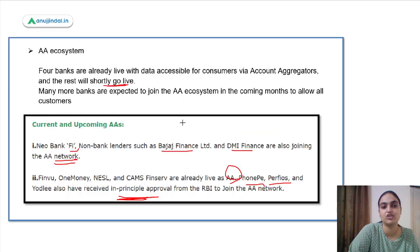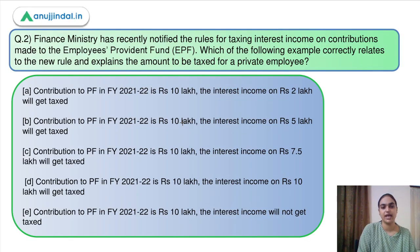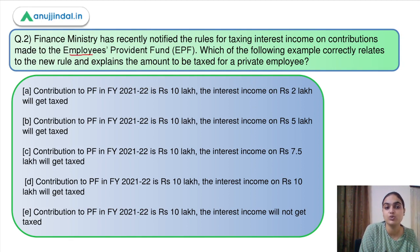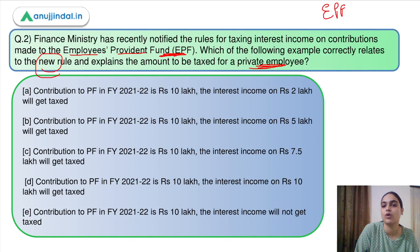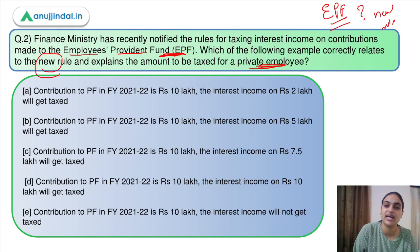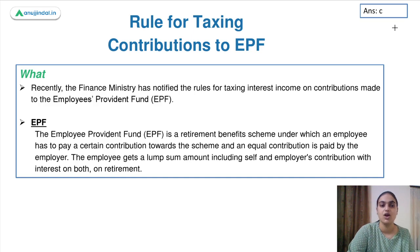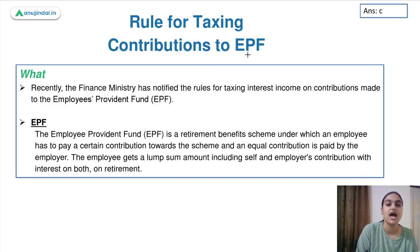Moving ahead to the next topic and the second question of the day: the Finance Ministry has recently notified the rules for taxing interest income on contributions made to the Employee Provident Fund. Which of the following example correctly relates to the new rule and explains the amount to be taxed for a private employee? Let us first discuss what is EPF, what is the Employee Provident Fund, and what are the new rules regarding taxation of the interest income earned on these funds, and then we'll come back to the question.